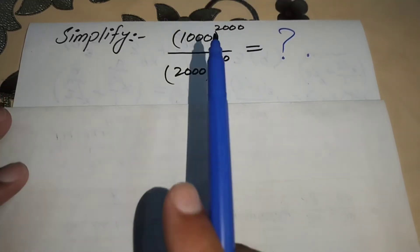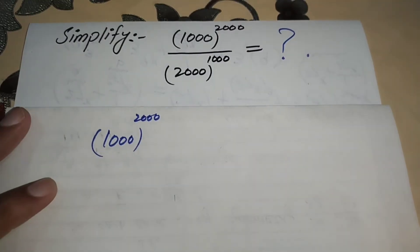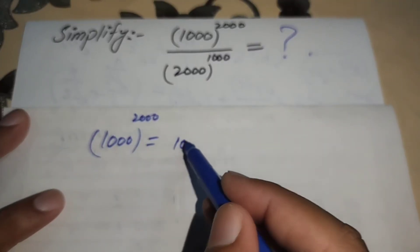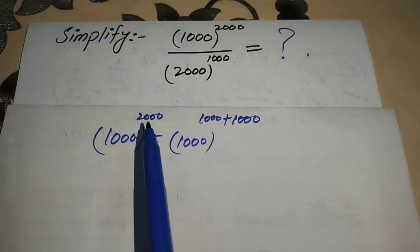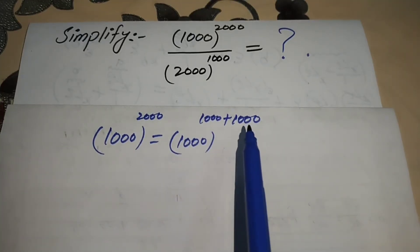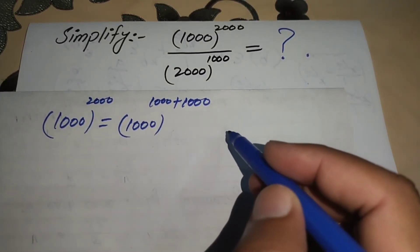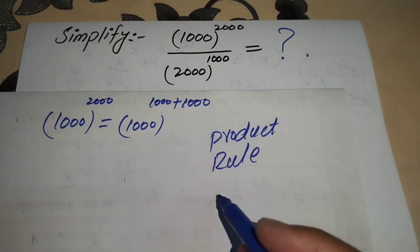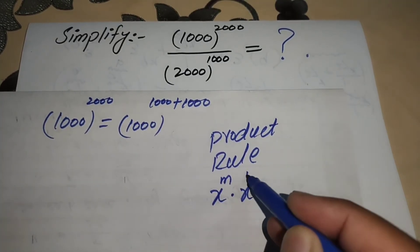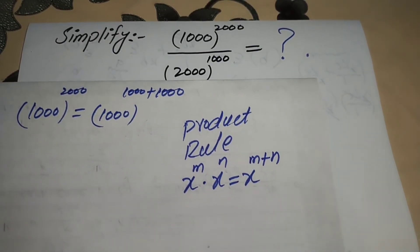Focusing on our numerator, which is in the form 1000 to the power 2000, we rewrite this as 1000 to the power (1000 + 1000), breaking 2000 into 1000 plus 1000. Applying the product rule of exponents — x^m · x^n = x^(m+n) — we split the numerator into 1000^1000 × 1000^1000.